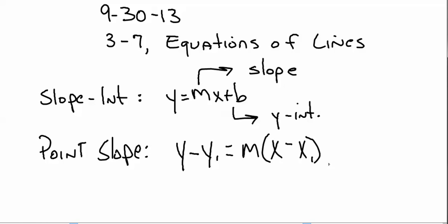If you're given the slope and the y-intercept of a line and you're asked to write an equation for it, which form would you use? Slope-intercept form. Good. What if you're given one point on the line and the slope of the line? Point-slope form.